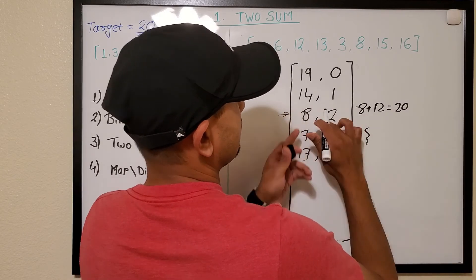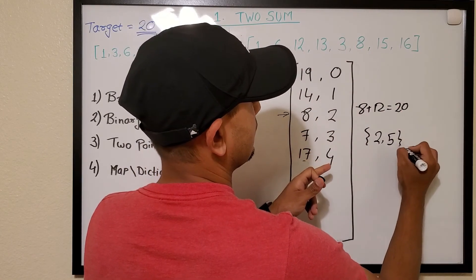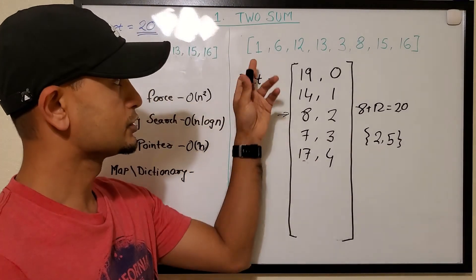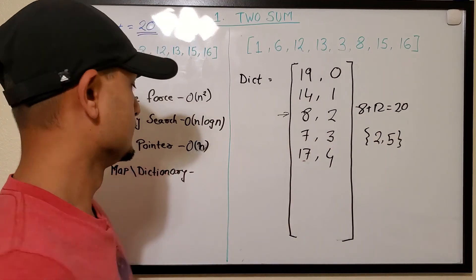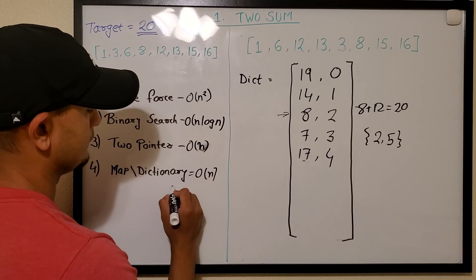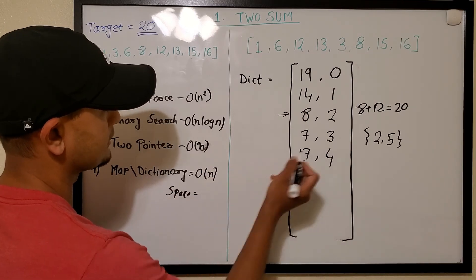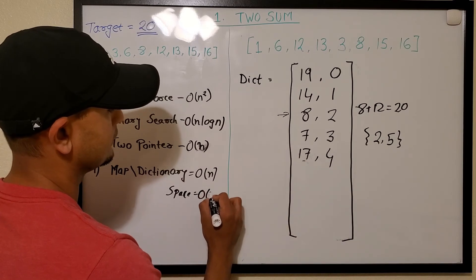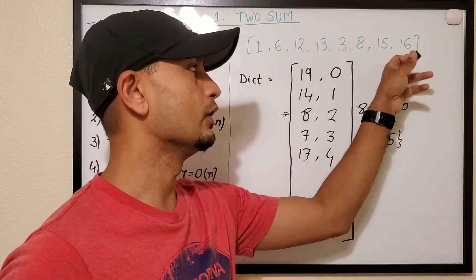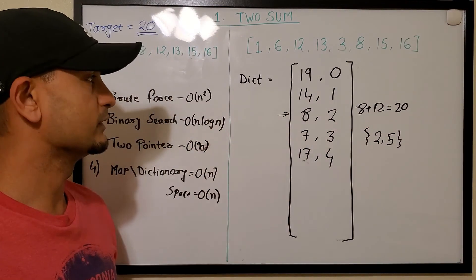The map/dictionary approach solves the two sum problem for unsorted arrays. The time complexity is O(n), but there is also a space complexity since we use a dictionary — in the worst case we store all numbers, so space complexity is O(n).